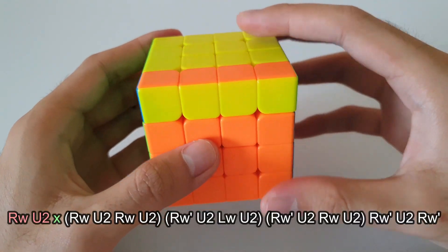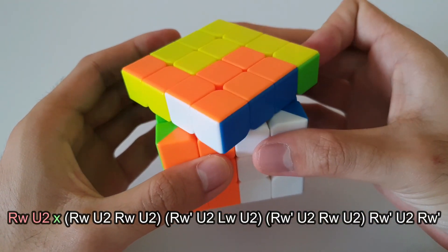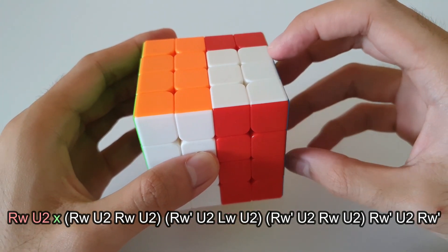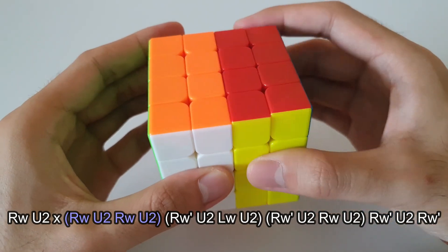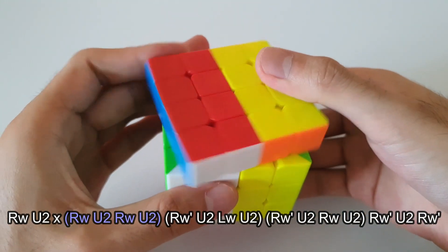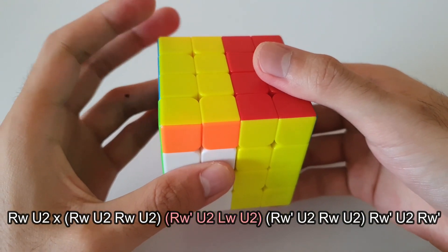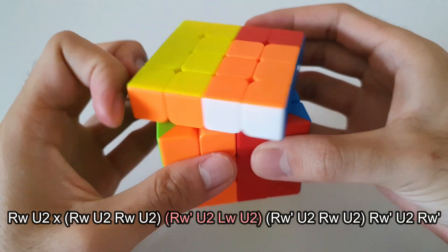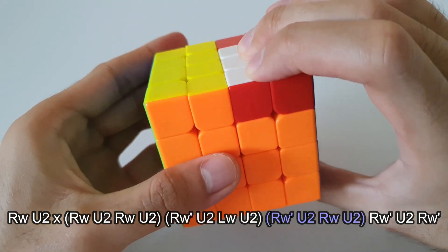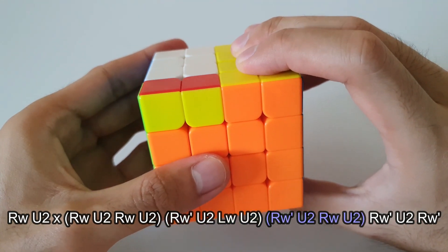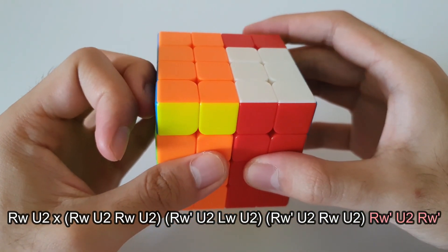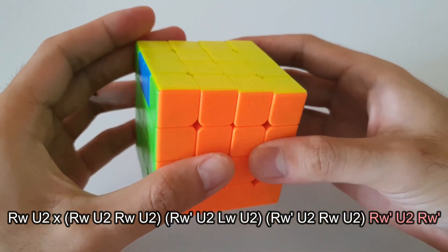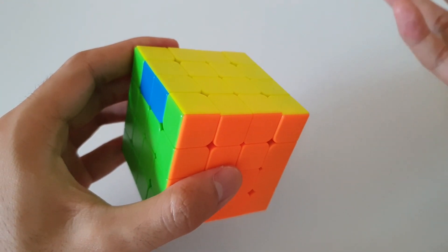So the algorithm starts off with right side up followed by a U2 and after that we rotate downwards to face the bottom and we follow through with right side up U2, right side up U2 again. Following that we have right side down U2, left side down U2, right side down U2. After that we have right side up U2, right side down U2 and followed by another right side down. And that is the OLL parity algorithm.